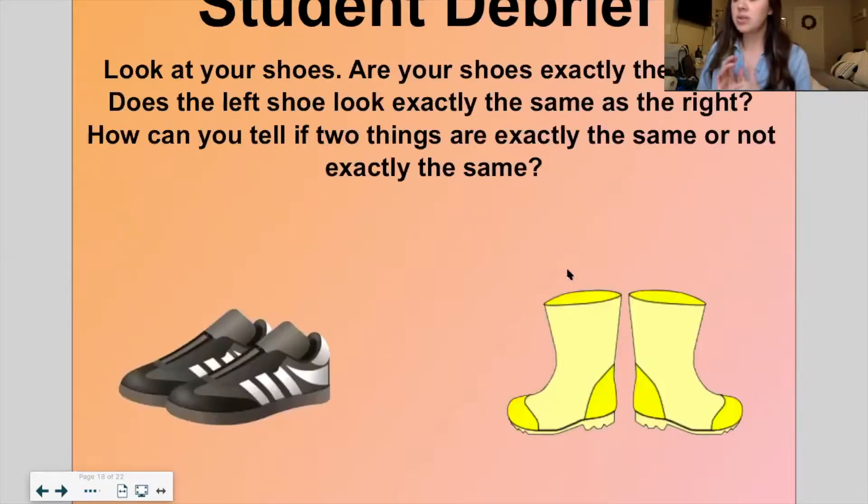Okay. Last part. So now is our student debrief. Remember, this is the time we kind of chat about what we've learned. So look at these shoes. Are these shoes exactly the same? What? No, these shoes are not exactly the same. This is like a soccer shoe, kind of a sneaker you might run in. And these are rain boots. These are totally different. I could wear these shoes to gym, but I could not wear these yellow rain boots to gym. I would be tripping all over there for outside, right? How can you tell if two things are exactly the same or not exactly the same? How? Tell your grandma or grandpa or brother or sister or friend who's with you. How can you tell? Well, you can look at their size. You can look at their color. You can look at their patterns and their designs. That's how you can tell if they're the same or not exactly the same. You got it.